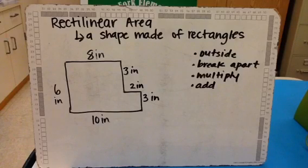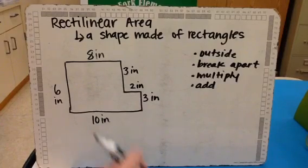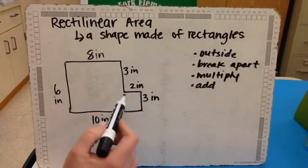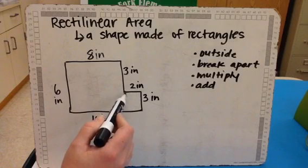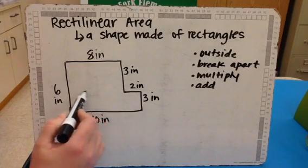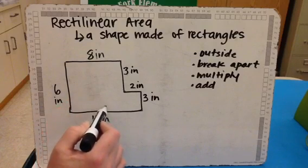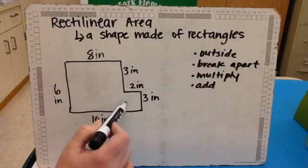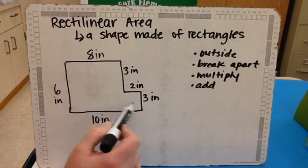So now I need to break it apart into two rectangles, because then I can find the area of a rectangle. We've already done that. For this shape, you find a corner and then you break it apart to make a rectangle. So here, I could break it apart here and have a top and a bottom rectangle. Or I could break it apart here and have two side-by-side rectangles.